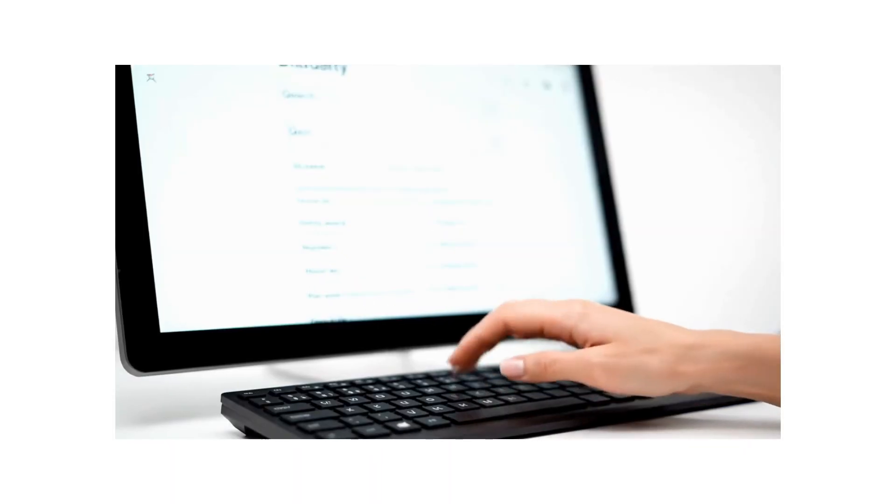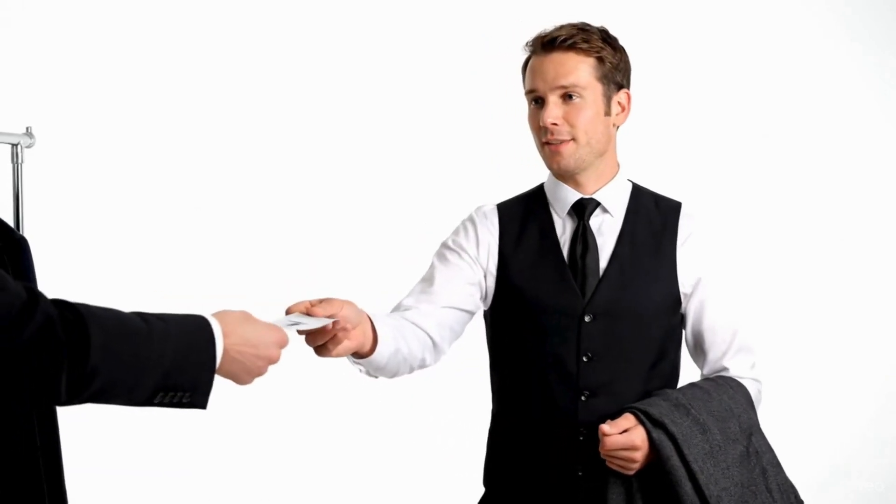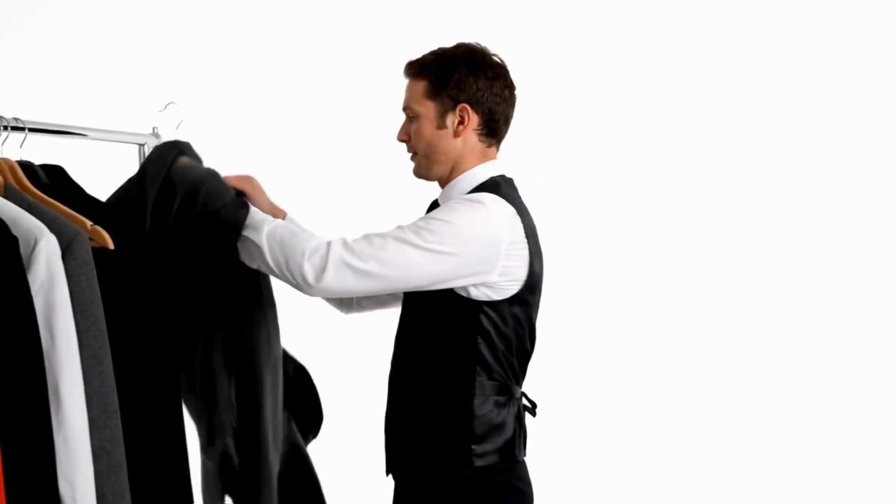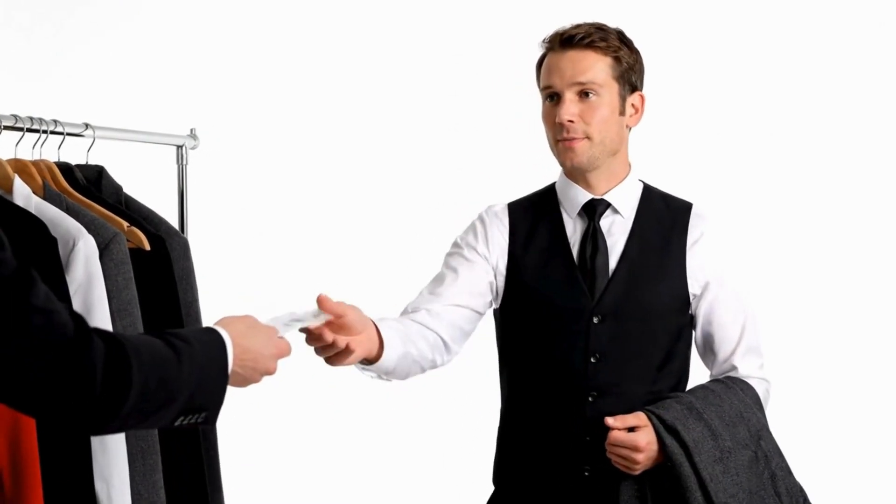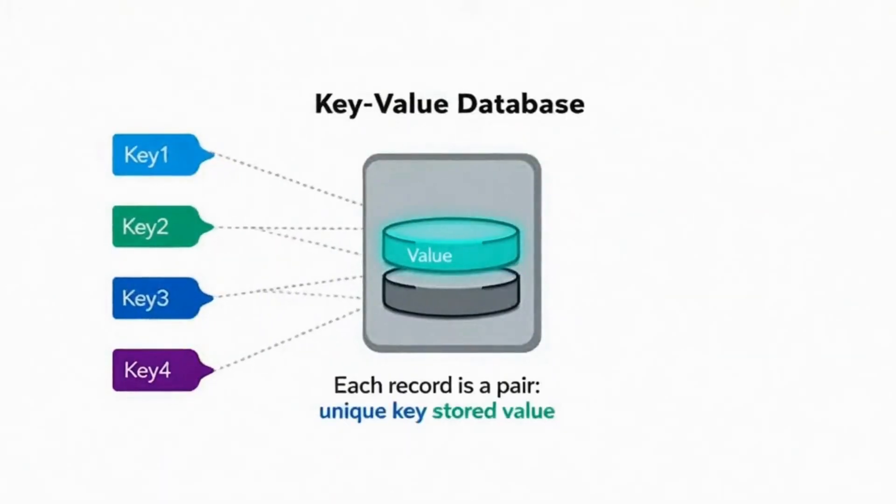Think of it like a coat check at a restaurant. You give them your coat, they give you a ticket with a number, the key, and later you use that number to get your coat back, the value. That's exactly how key value databases work.